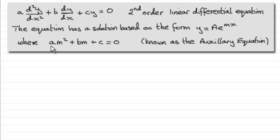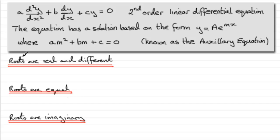Now when you're solving for m in this quadratic equation, we should be familiar with the fact that we can have three scenarios. We could have roots that are either real and different, or they could be equal roots, or the roots are imaginary. And each one of these cases leads to different general solutions. And that's what I want to discuss here, what those general solutions would be.